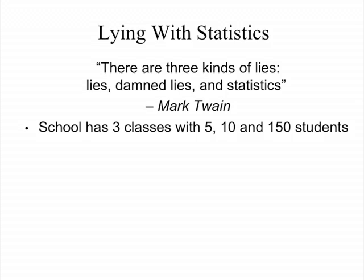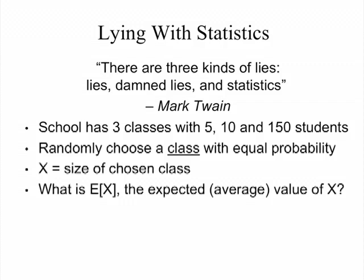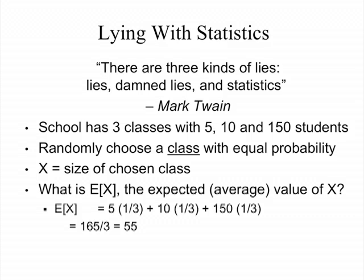Let's say we had a school with three classes, with 5, 10, and 150 students in them. What's the average class size at the university? If we randomly choose a class — treating all classes as equally probable — and X is the size of the chosen class, then the expected value of X is (1/3)(5) + (1/3)(10) + (1/3)(150), which is an average of 55 people. If you ask most people what's the average class size, they'd add the three numbers together and divide by 3 and get 55.